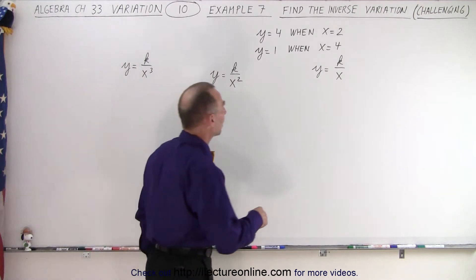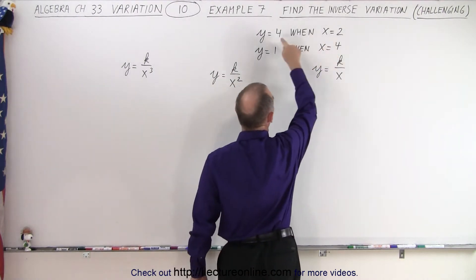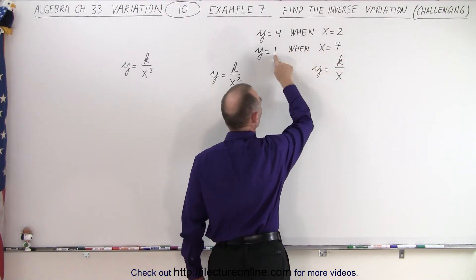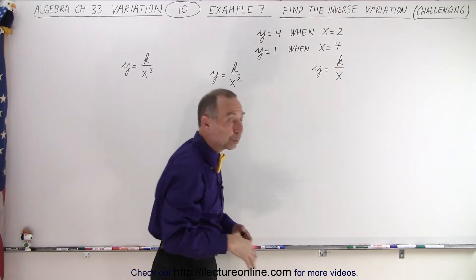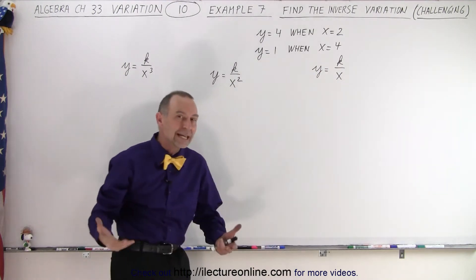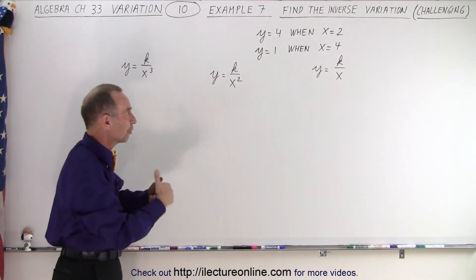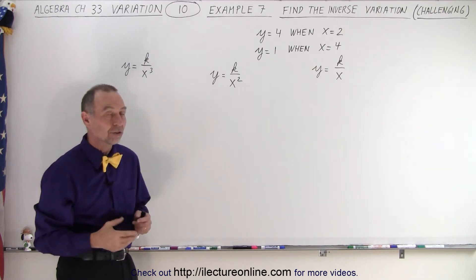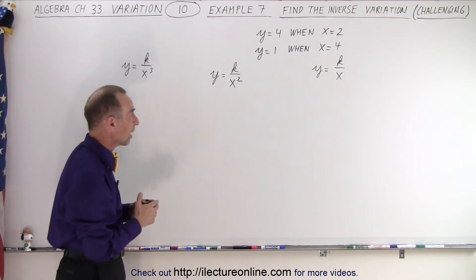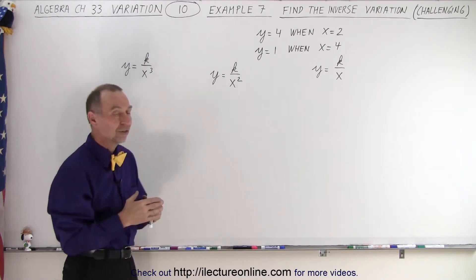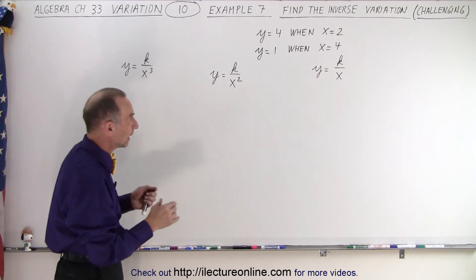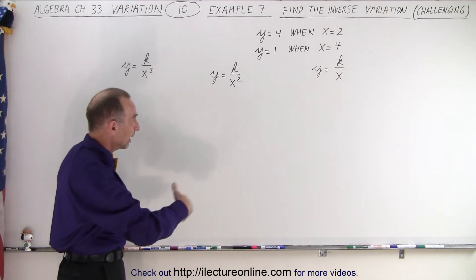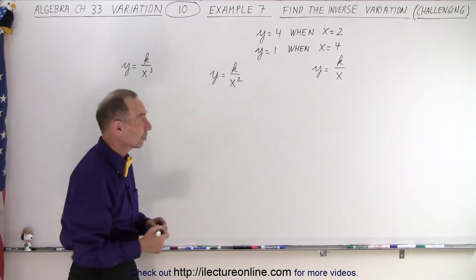Notice that when x equals 2, y equals 4. When x becomes bigger, y becomes smaller, and that would indicate an inverse relationship — an inverse variation. But which of those equations is it? Let's do it one at a time and see which one is the right one. We do that by first finding k each time and then plugging in the second set of values.